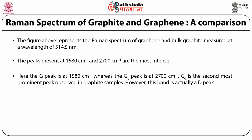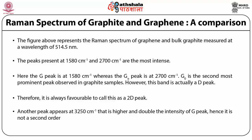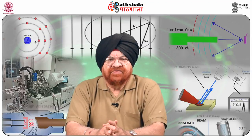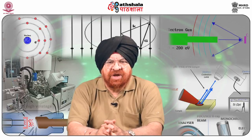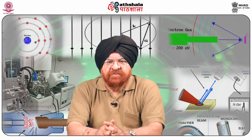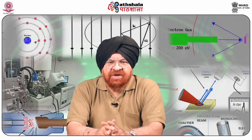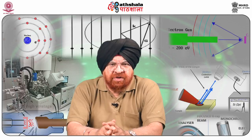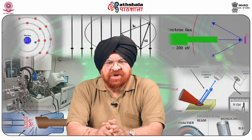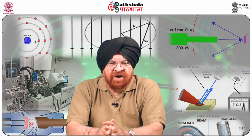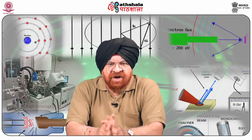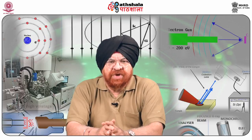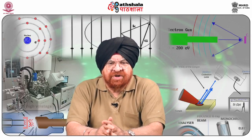The G' band is actually a D peak overtone, so it is always favorable to call it the 2D peak. Another peak appears at 3250 cm⁻¹ at higher intensity than the G peak. The second figure displays a prominent change in the shape and intensity of the 2D peak of graphene compared to bulk graphite. In graphite, the 2D peak consists of two components, 2D1 and 2D2, with intensities roughly 1/4 and 1/5 the height of the G peak. Graphene appears to have a single sharp 2D peak that is four times more intense than the G peak.